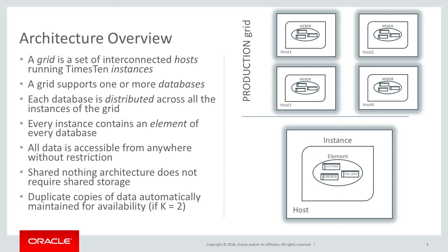Each of those databases in X10 Scale-out is distributed across all the instances of the grid. Part of every database is present in every instance on every host of the grid. We call those parts elements. A database consists of elements — there's one element of each database in each instance of the grid. From a user's perspective, this all looks like one database. All the data in all of these elements is available from anywhere, all the time, without restriction. You can have a single transaction which updates data in three different elements and atomically commits it.